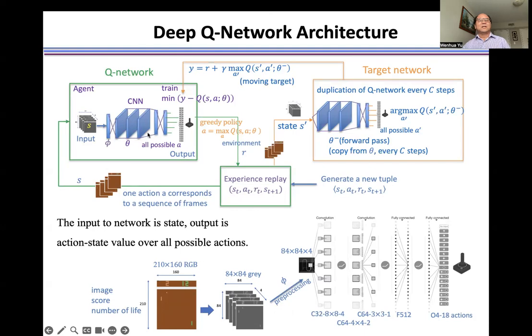We just need to train this Q network from the input state. And then we find the Q value function of all the possible actions.